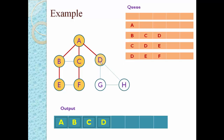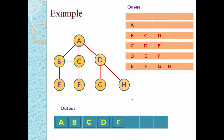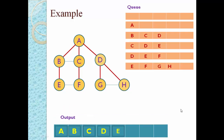Explore D — its neighbors are G and H, both unvisited. Store G and H in the queue. The queue now has E, F, G, and H. Perform dequeue: E is deleted and printed as output. Explore E — its neighbors are B and F, but both are already visited, so nothing is added to the queue. The queue now has F, G, and H.